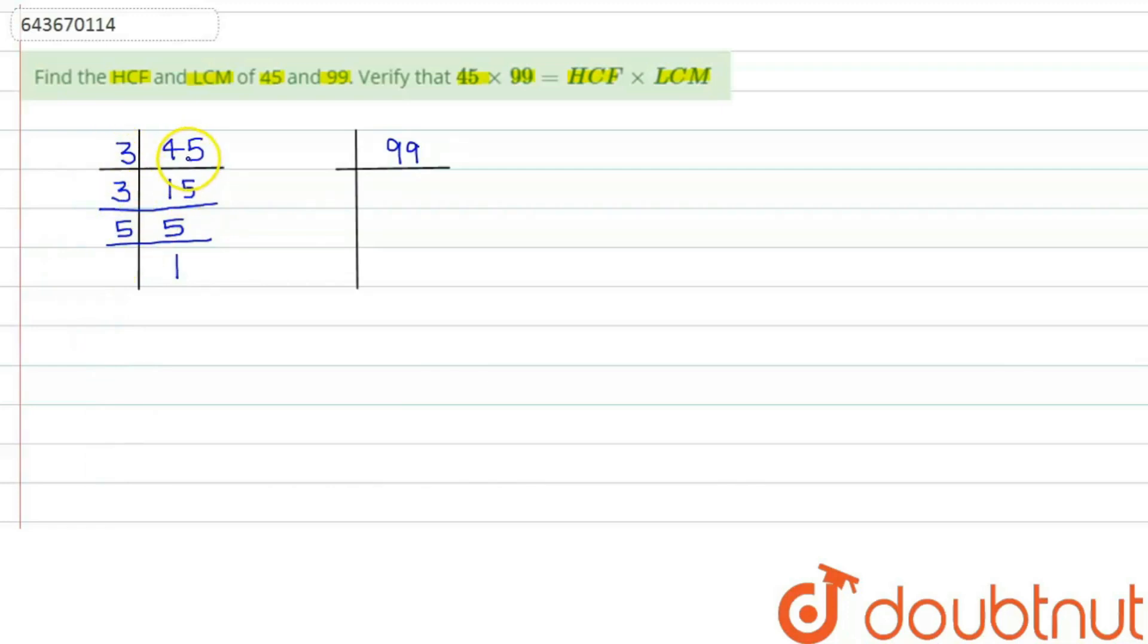Now we will find factors of 99. So 99 is divisible by 3, so here we get 33. Again 33 is divisible by 3, we get 11 over here, and 11 ones are 11.